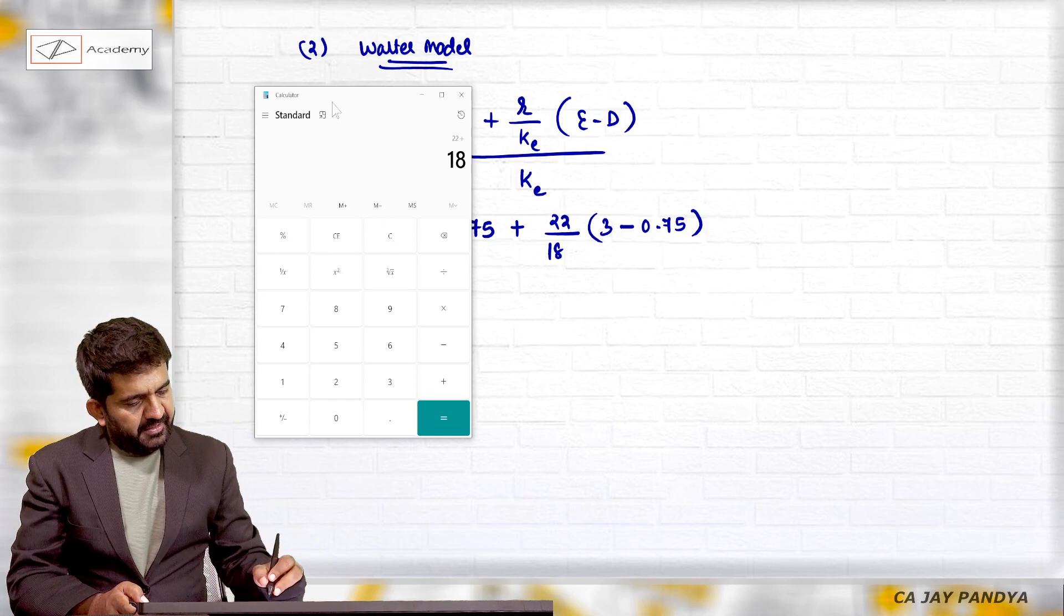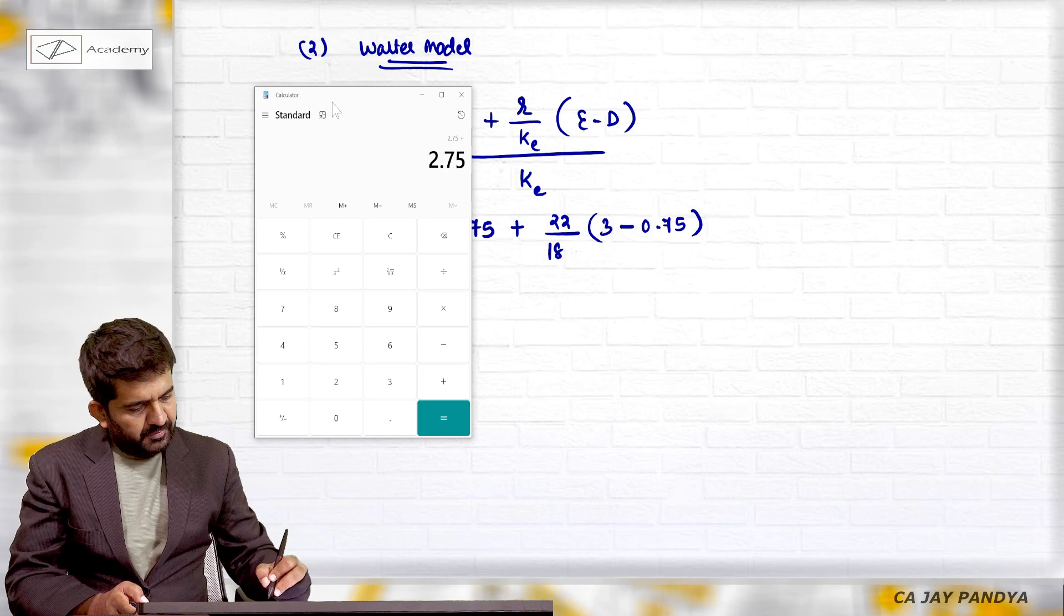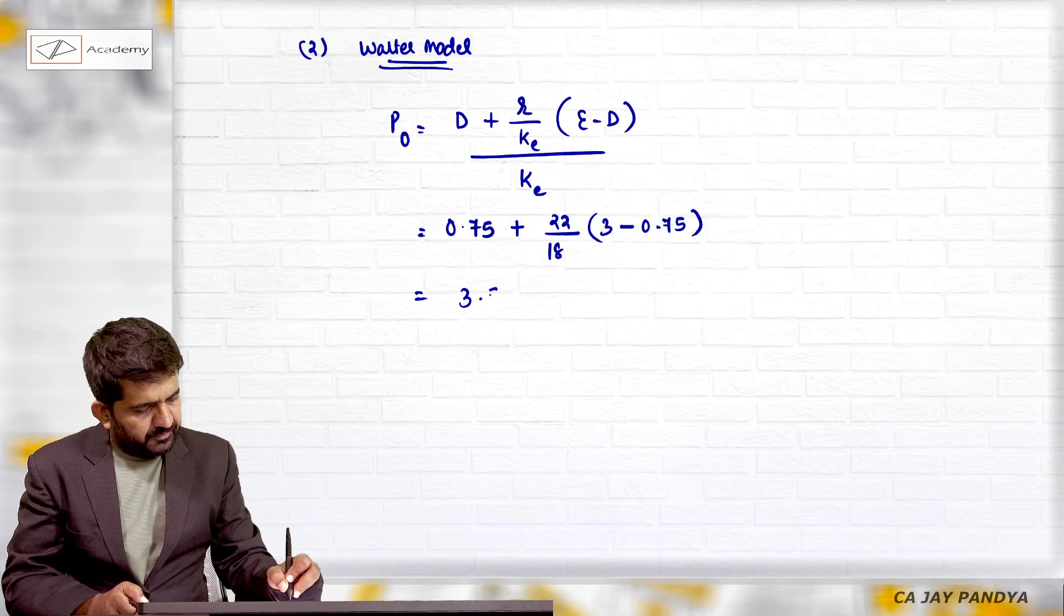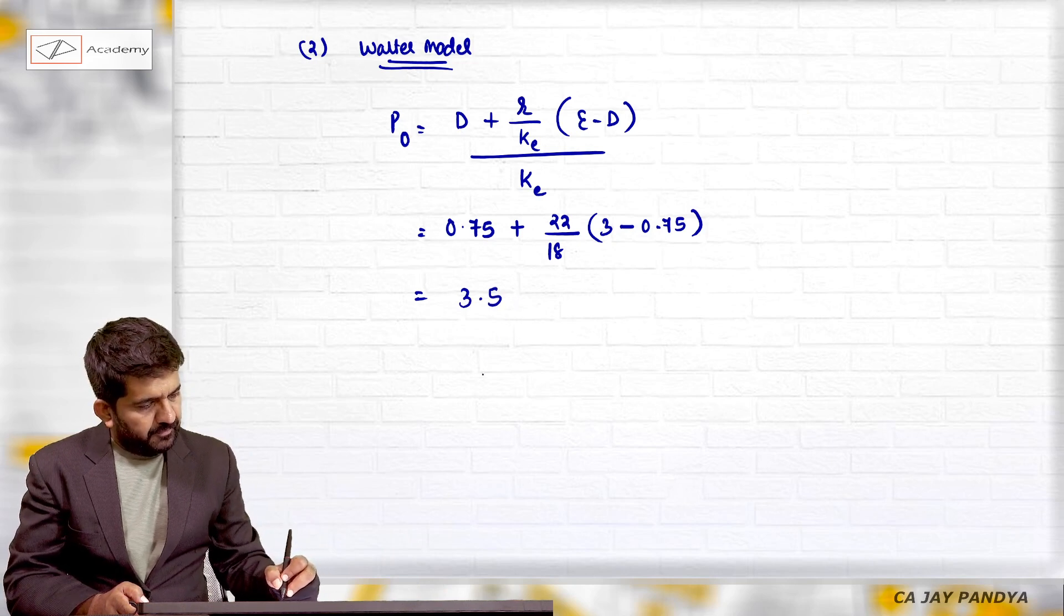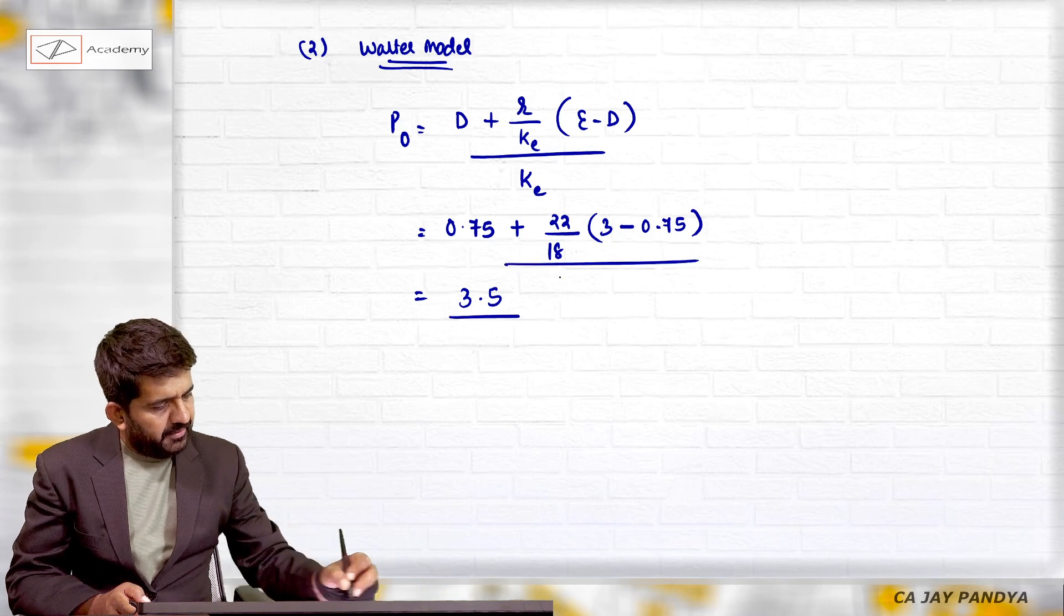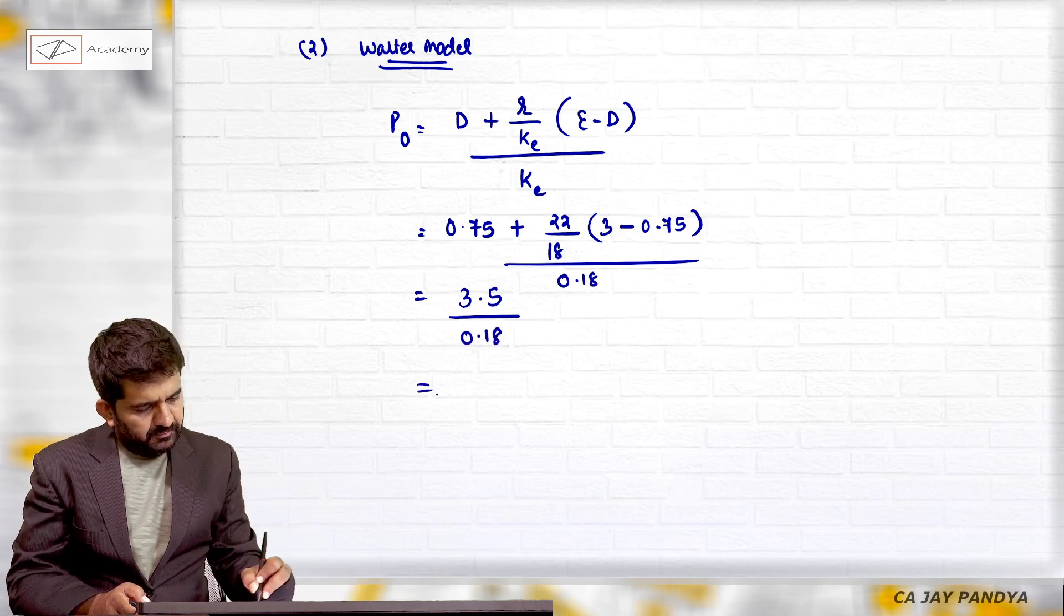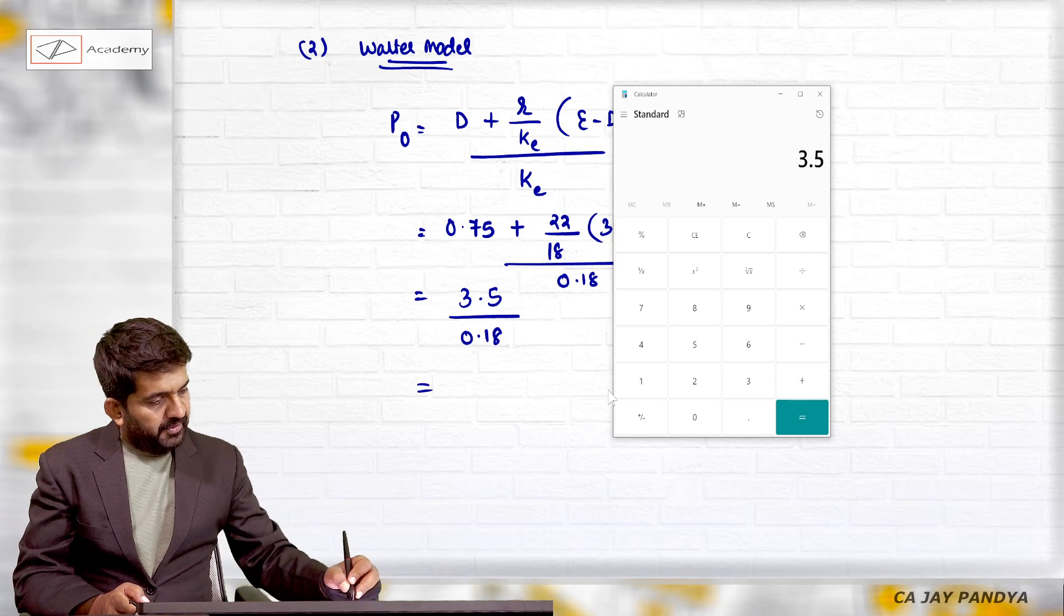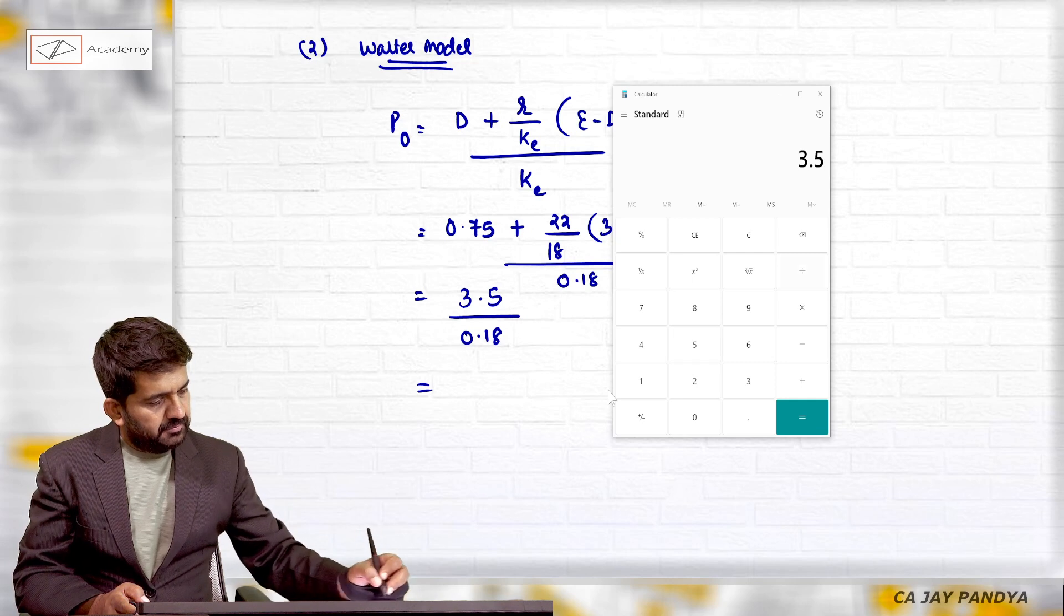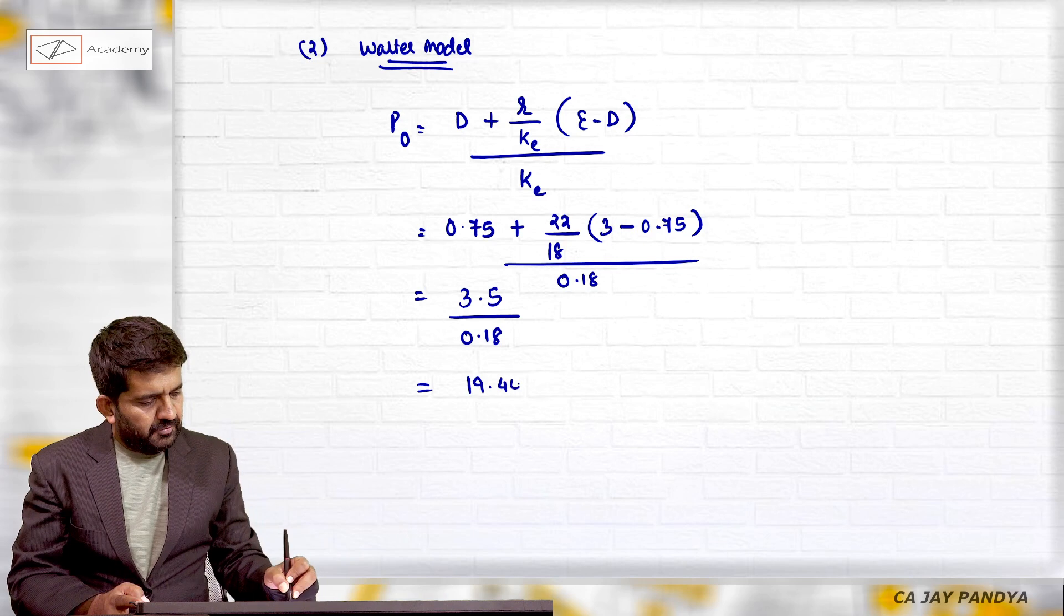This will be 22 divided by 18 multiplied by 2.25 plus 0.75, which equals 3.5. Divided by Ke, which is 0.18 or 18%. So 3.5 divided by 18% equals 19.44 rupees.